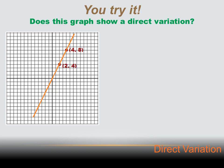Does this graph show a direct variation? Yes — it's a straight line, and it goes through the origin. So that graph does represent a direct variation. Now let's take this further and create an equation for it. I've got two points on that line: (2,4) and (4,8). Is there a constant I can multiply 2 by to get 4? Sure — 2 times 2 equals 4. Will that constant work on the second point? If I multiply that X value, 4, by 2, do I get that Y value of 8? Yes, 2 times 4 equals 8. So I can express that as Y equals 2X, which is in the format of a direct variation, Y equals KX.